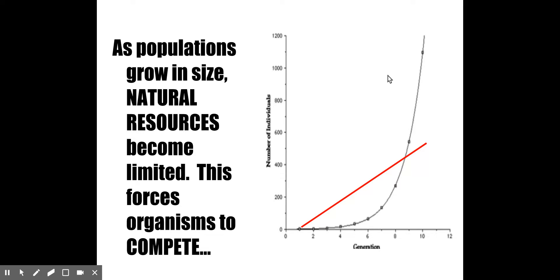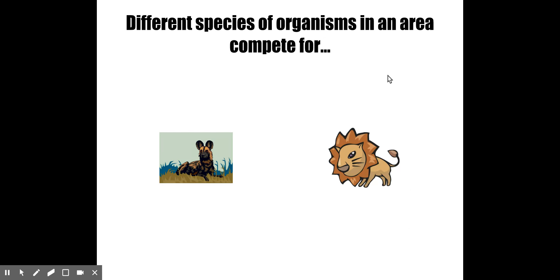Pretty soon the population will crash because it's going to run out of one of the necessary factors needed for a population to exist — such as food, shelter, access to water, or space. There is competition within a population of a particular species, but also competition between members of different species that occupy the same trophic level in a given ecosystem.